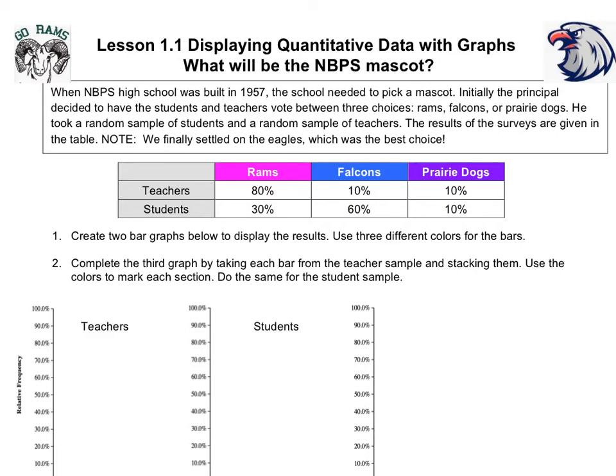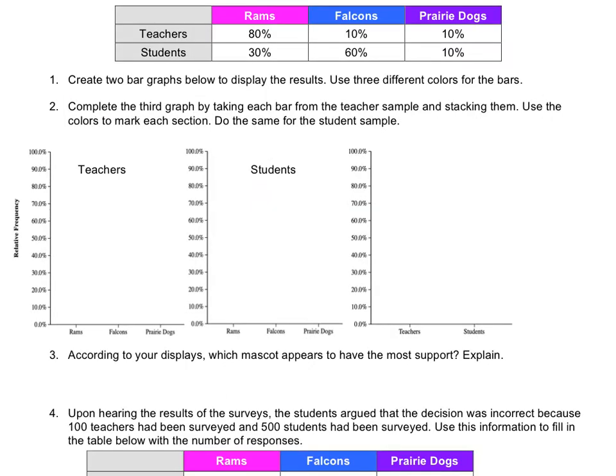We could, if you remember, use segmented bar graphs, but since the graphics give us a place to put the three separate bars for rams, falcons, and prairie dogs, that's how we're going to code those. Notice that the data is given to us in relative frequencies, or proportions, or percents, and so that is how our vertical axis is scaled. We've drawn our bar graphs according to the percents given to us in the table.